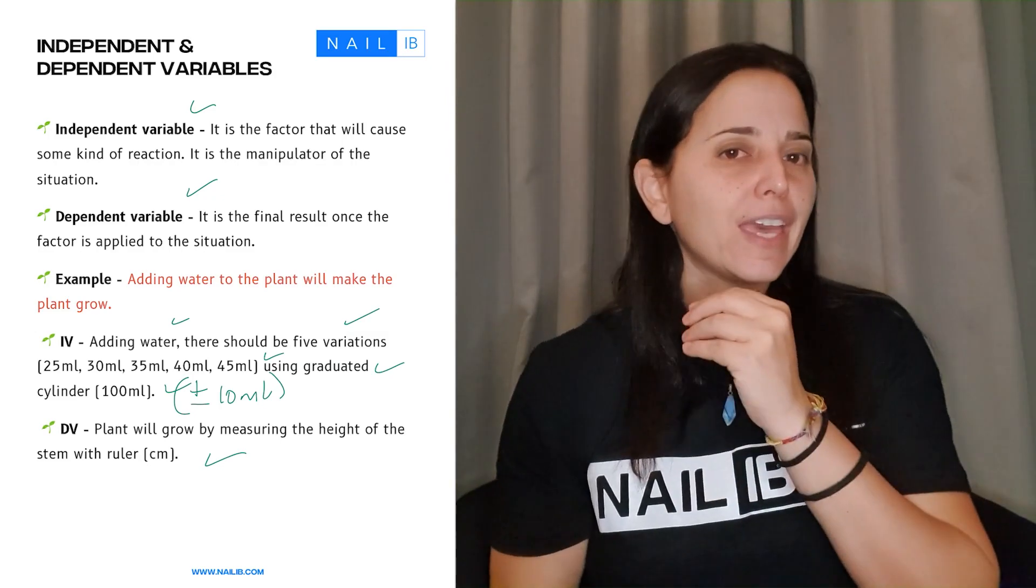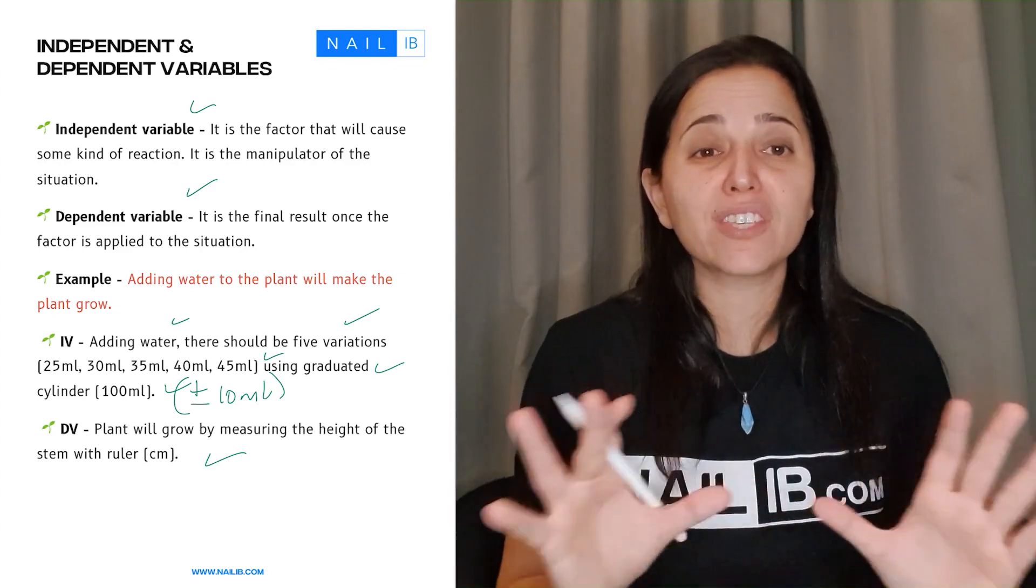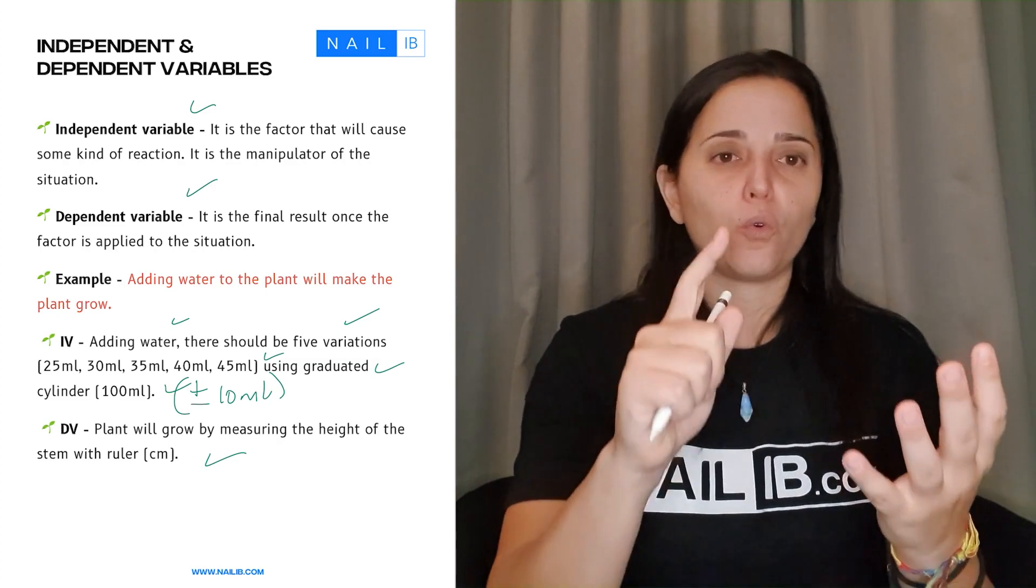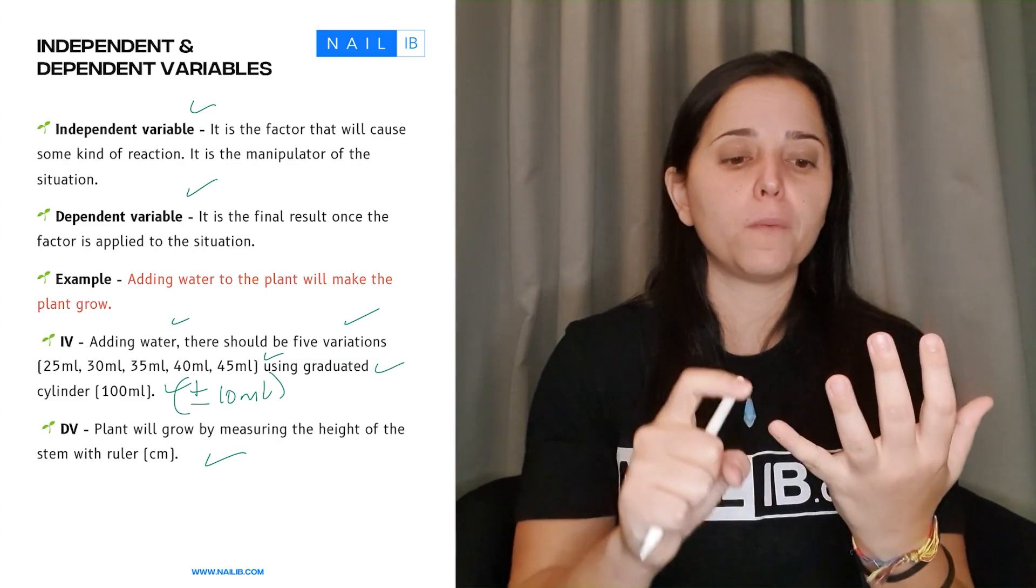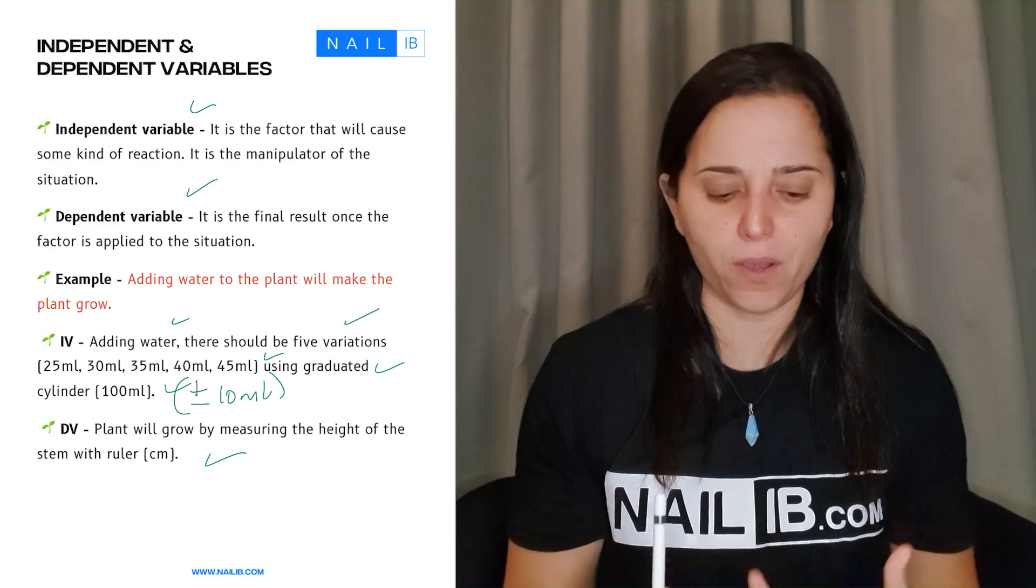So make sure that you are putting the units there and you tell me what is the equipment used for that. So independent variable is not just about mentioning oh my independence temperature. If you say that it's too brief. So here's the rules. Put the independent variable, put the five variations and put the equipment that you're using for that one.